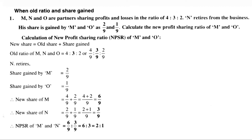First, we note the old profit sharing ratio: 4:3:2. Next, the share gained by the remaining partners — 2/9 for M and 1/9 for O. These are the two important values needed to calculate the new profit sharing ratio. The formula is: New Share = Old Share + Share Gained. We already have both values, so the calculation is straightforward.